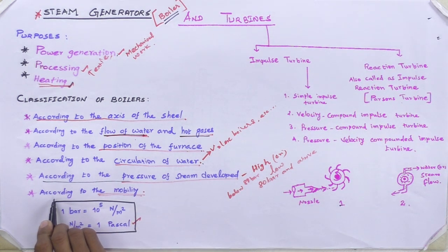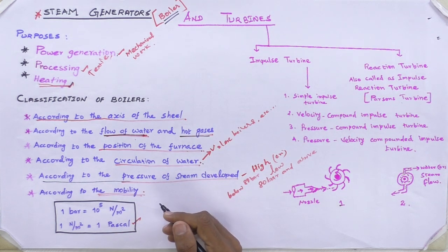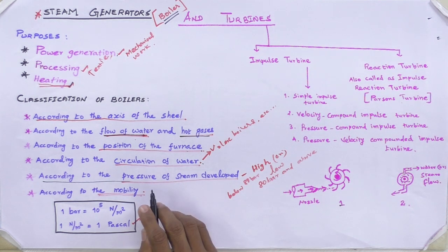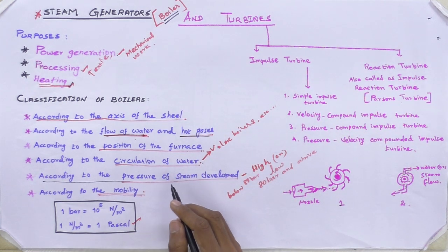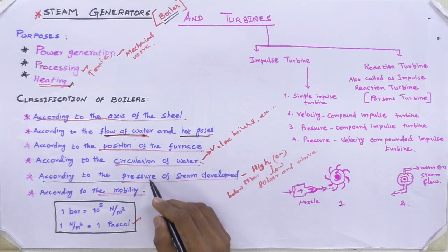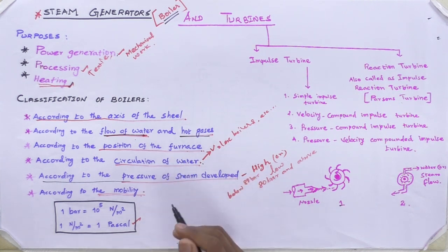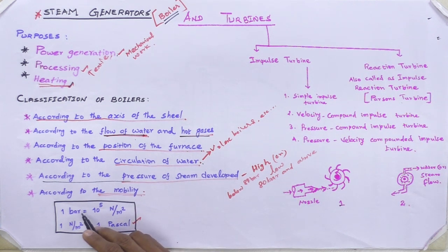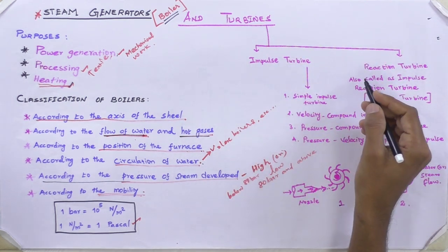The sixth classification is according to mobility — stationary or portable boiler. Boilers are classified as either stationary or mobile, including marine applications. Stationary boilers are used in power plants to produce steam for power generation. Mobile or portable boilers are fitted on vehicles that can move from one place to another. Example: locomotive boiler in marine applications. One bar pressure equals 10 to the power 5 Newton per meter squared, and 1 Newton per meter squared equals 1 Pascal.